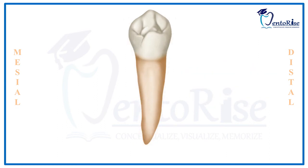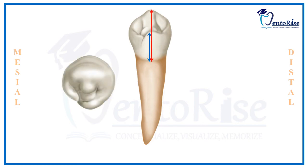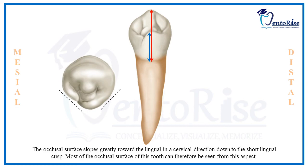The lingual cusp is present on the lingual surface, and its length is very short compared to the buccal cusp. Also, the occlusal surface of this tooth tapers towards the lingual side, making the occlusal surface very well visible from the lingual aspect itself.